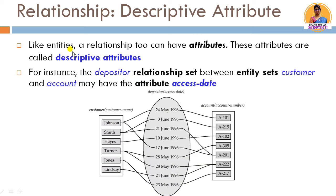Relationship sets can sometimes also have attributes, called descriptive attributes. For example, if we have a customer set and an account set connected through a depositor relationship, the depositor relationship itself can have an attribute like access date — indicating when the customer accessed the account. This attribute on the relationship is called a descriptive attribute.